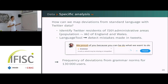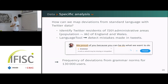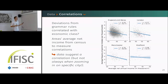This allows us to get the frequency of deviations from grammar norms for around 130,000 users identified in space. We chose grammar mistakes because they are one of the most frequent and very telling of the use of non-standard language, as opposed to typos which are less informative.